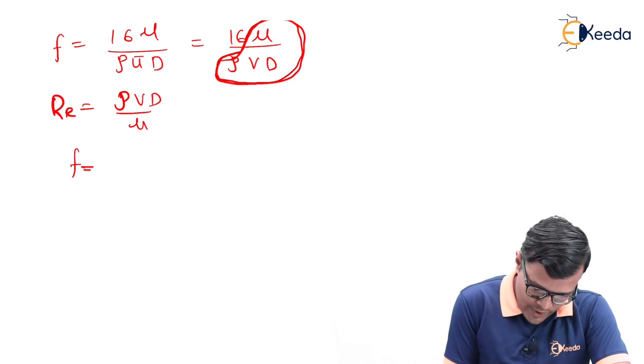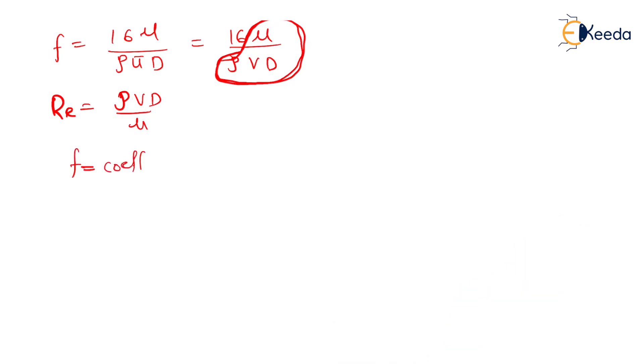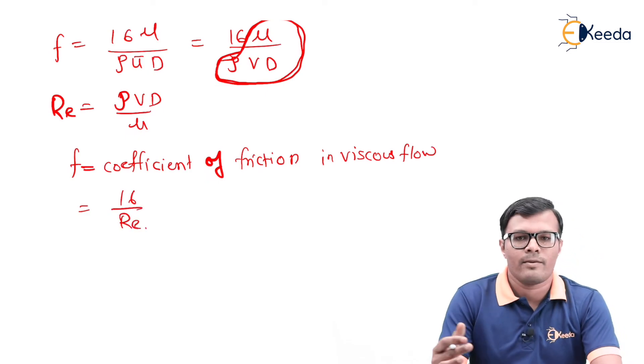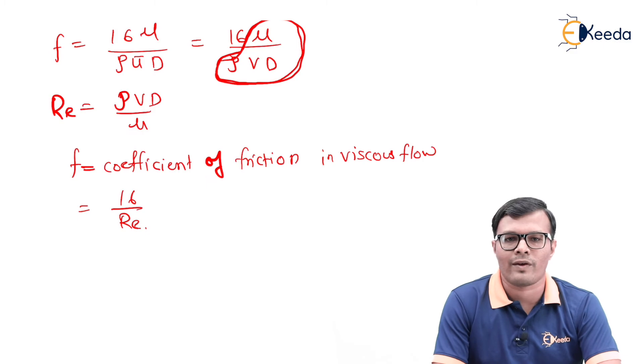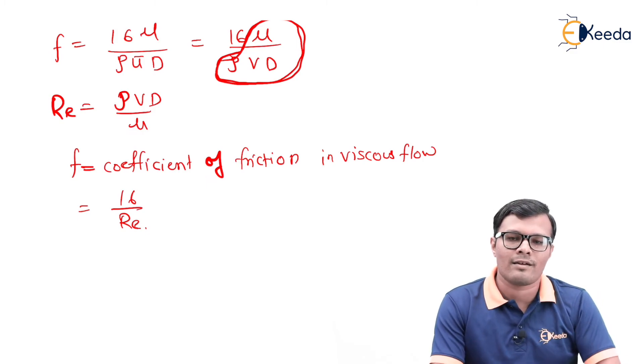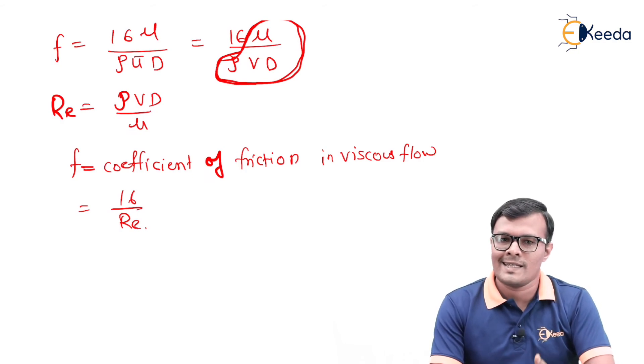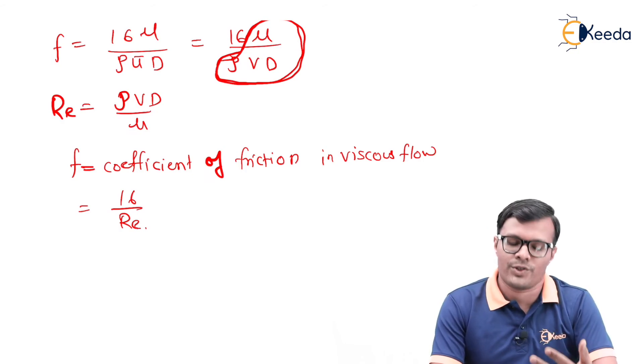This coefficient of friction in viscous flow can be calculated as 16 upon Re. By using this relation, now we are able to calculate value of coefficient of friction. It means that we have to use this relation to calculate coefficient of friction.